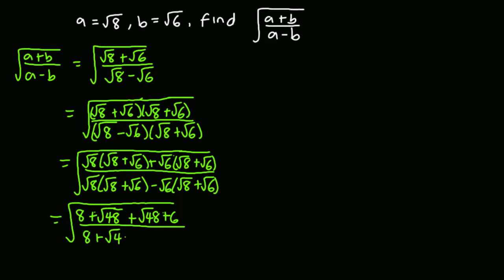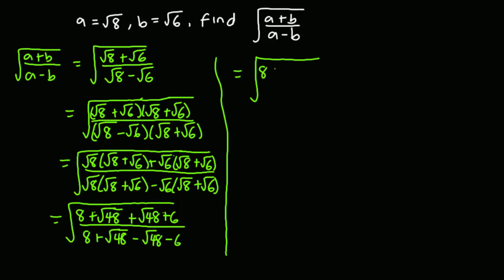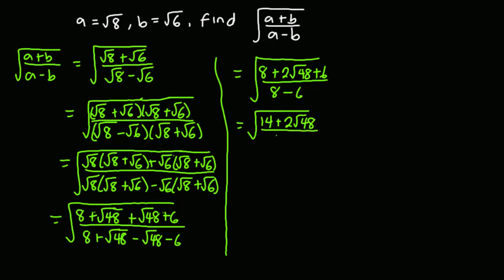We also get another √48 plus 6, all divided by 8 plus √48 minus √48 minus 6. So we end up with (8 + 2√48 + 6) all divided by (8 − 6), which gives us (14 + 2√48) divided by 2.